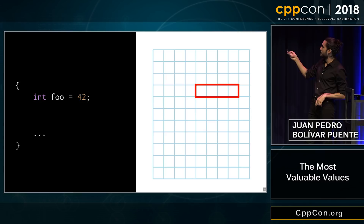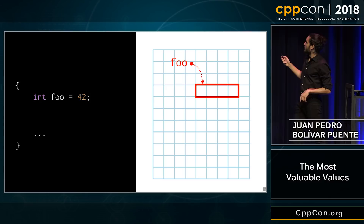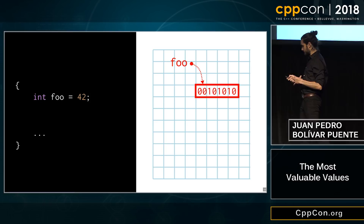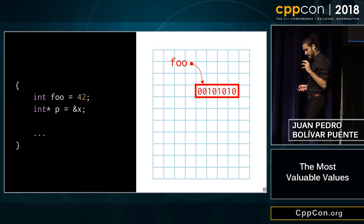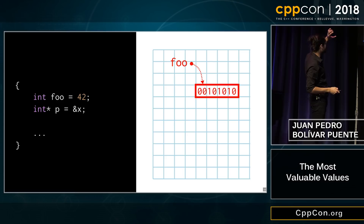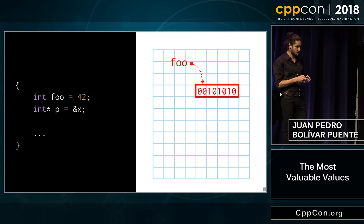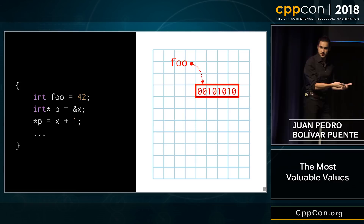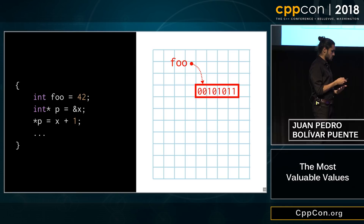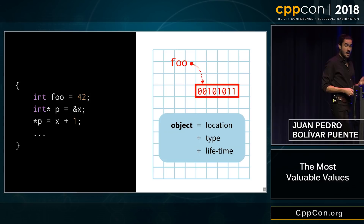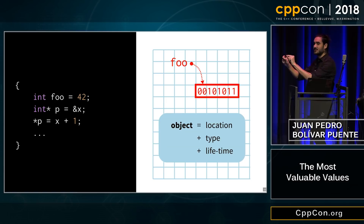An object is this region in memory — a block of squares — that by the rules of C++ is said to be associated to this name for this scope in particular. That's the name. And then in this box, we put the value. This object is a thing that exists over time — it has a lifetime, in this case the scope. It has an identity, which is its pointer, that we can query with an ampersand. And we can actually use this identity to do things to it, to modify it and make it evolve over time. An object is a location plus a type — which restricts and gives meaning to the values stored inside — plus a lifetime.